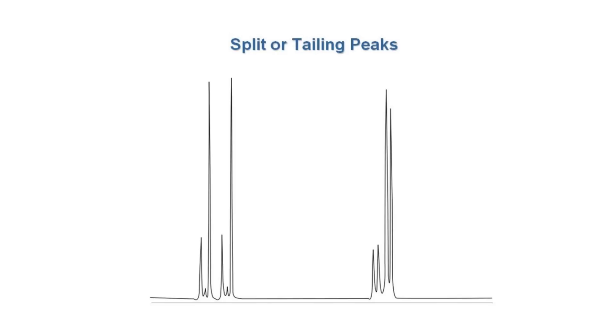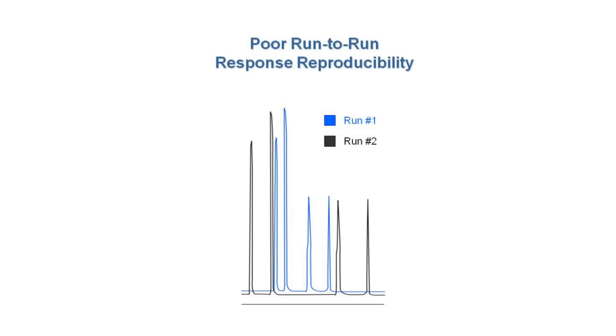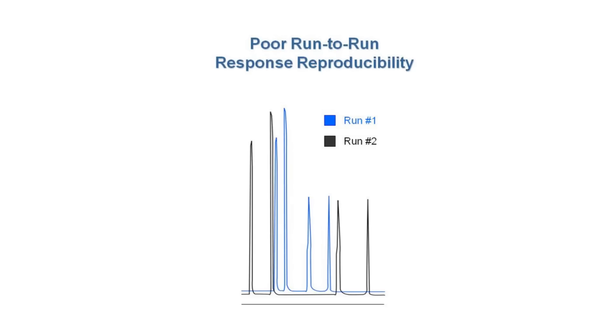Columns installed at improper or inconsistent depth will cause various chromatographic problems including poor sensitivity, split or tailing peaks, and poor run-to-run response reproducibility.